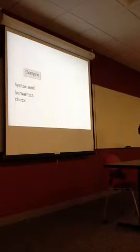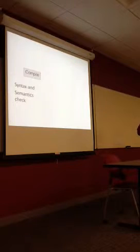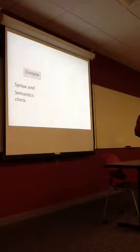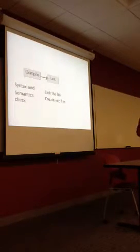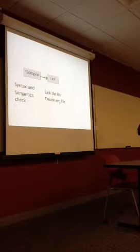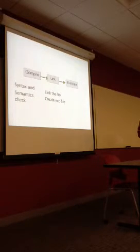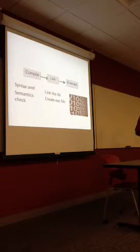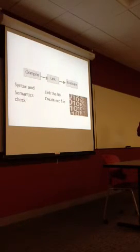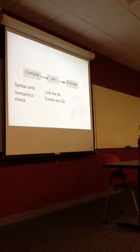So I will introduce the process. First, when you compile a program, the compile process will check your syntax and semantics. When it is correct, it will link the libraries in the computer and convert the file into an executable file. And last, it executes. Now the language input will become sequences of zeros and ones that the computer can understand. Then it runs.